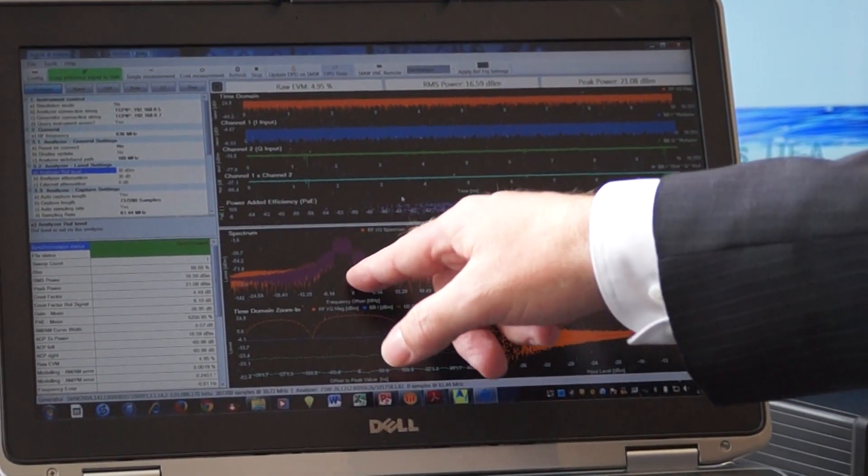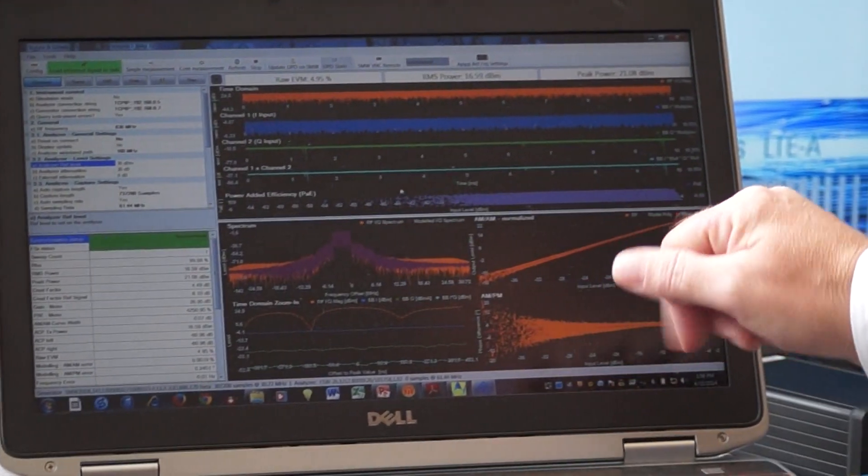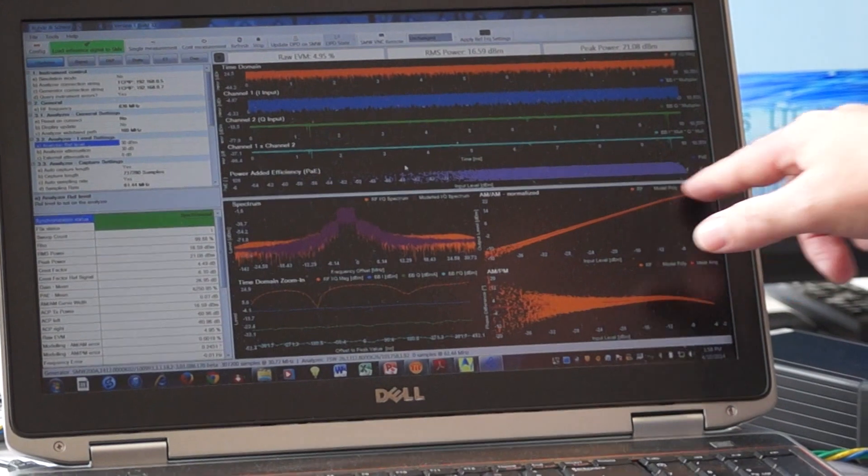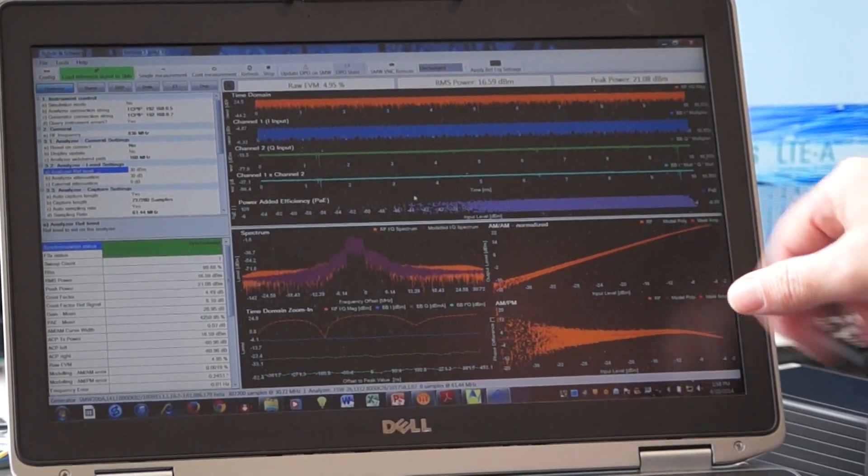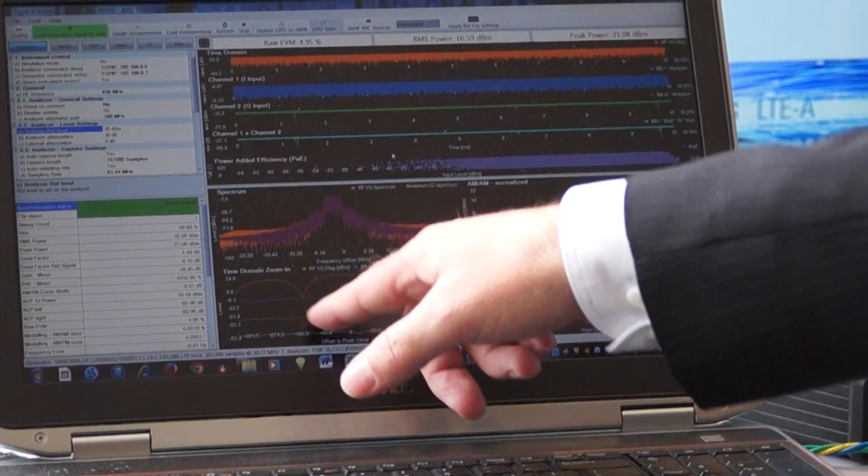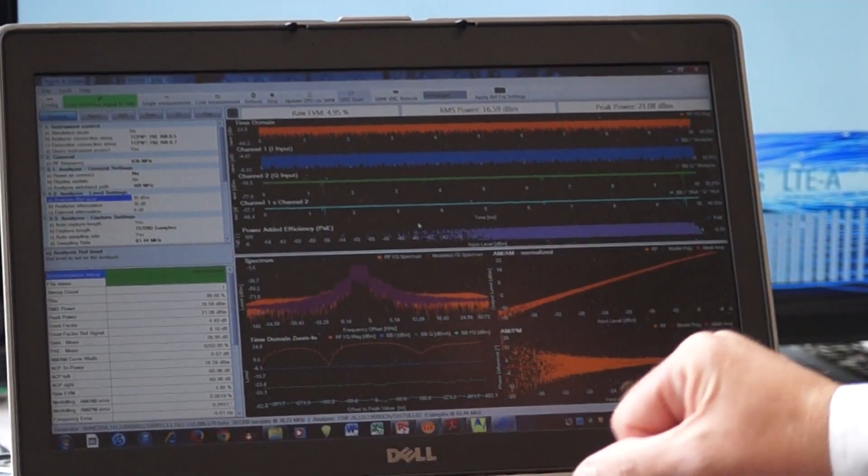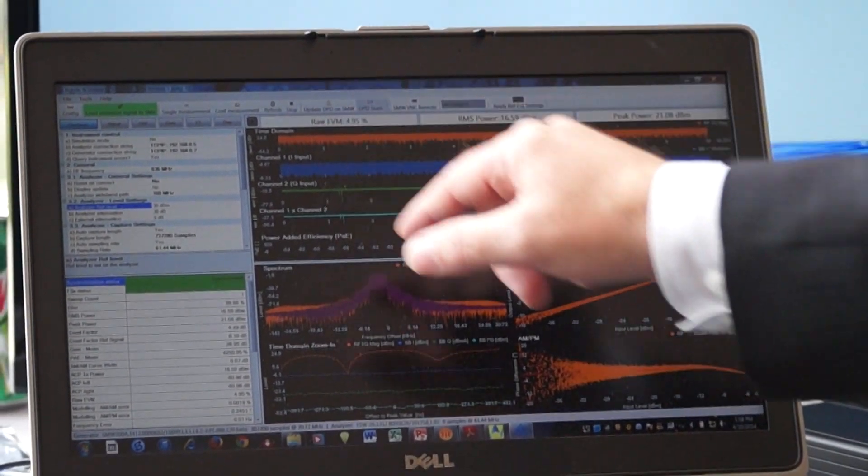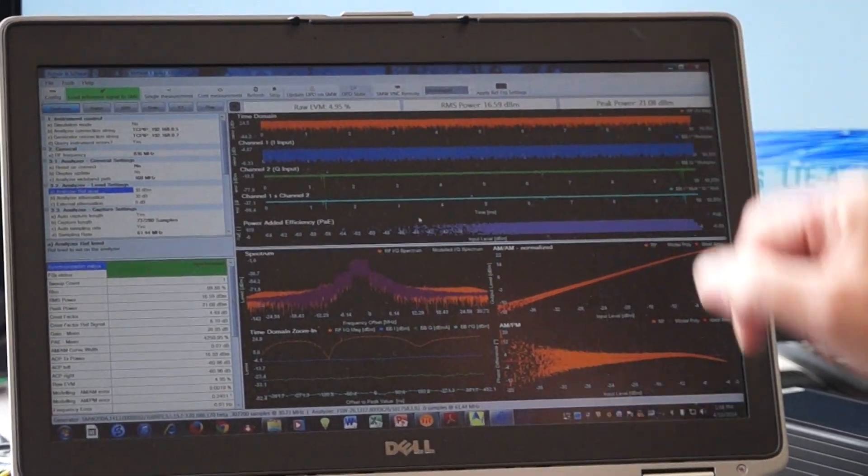We have a spectral shot, so we can get some ACLR measurements. We have an AM to AM plot, so you can see when you're going into compression, AM to PM as well. We have some time domain shots of the timing between the RF and these baseband signals. We have some raw EVM numbers, RMS power, and peak power values.